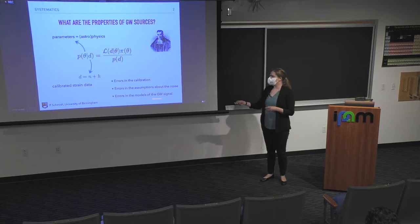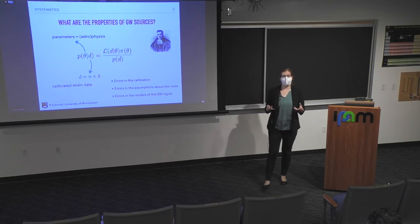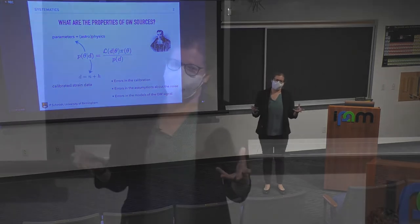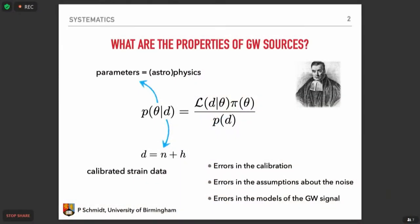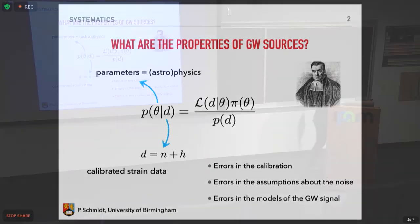And so how do the assumptions that we make about the noise propagate into the inferences on the source parameters? And last but not least, if you're interested in doing a modeled analysis, and that will be the main focus of today. Spoiler here, because what we have observed to this date is, of course, predominantly coalescences of compact binaries, black holes, and neutron stars. And so if you do a modeled analysis, Juan was already hinting at that yesterday, we make a lot of simplifying assumptions in these models too.